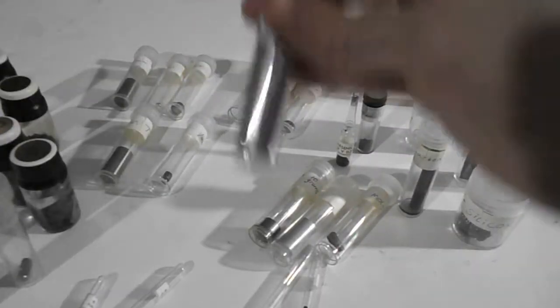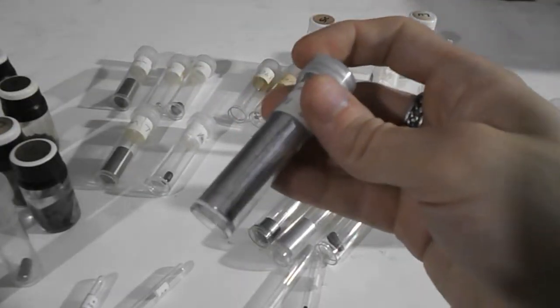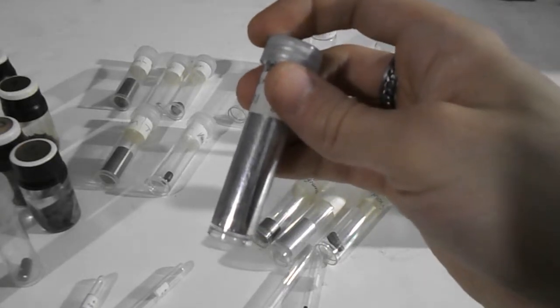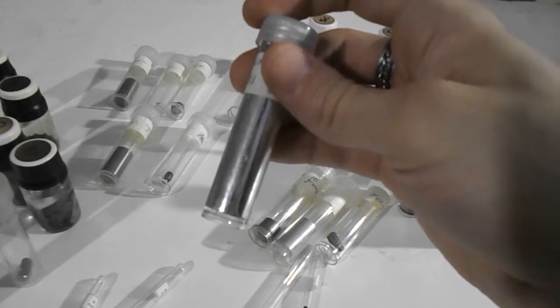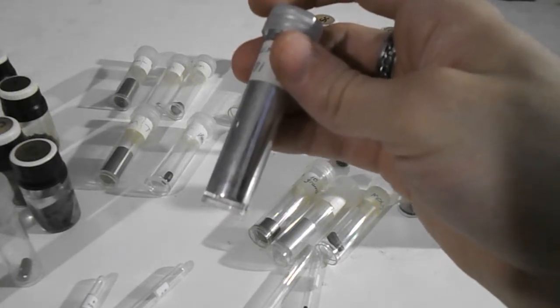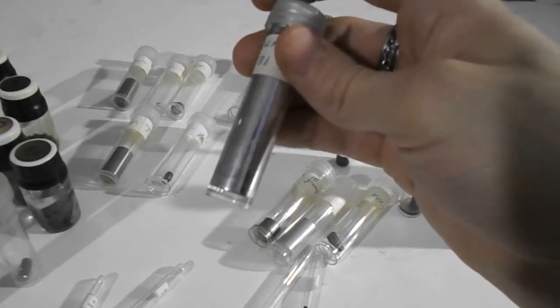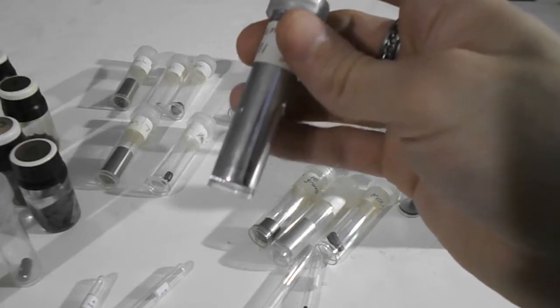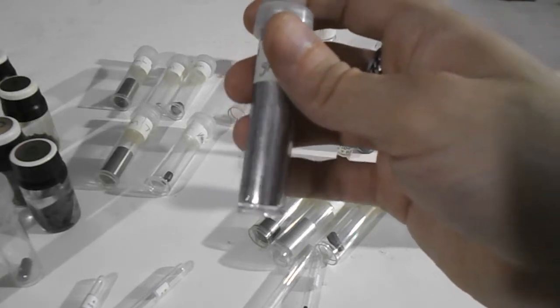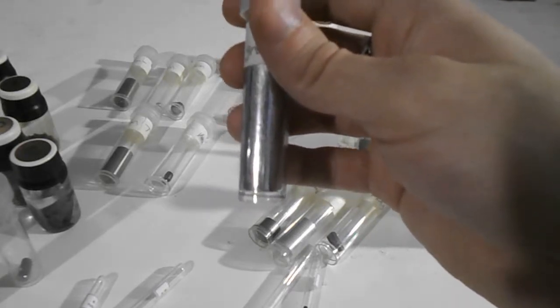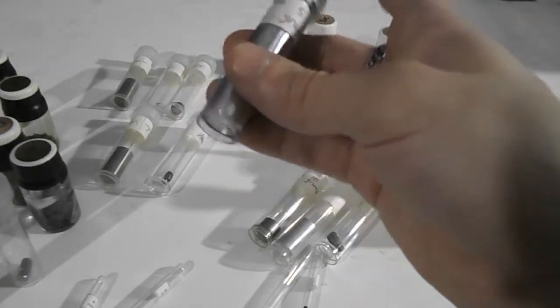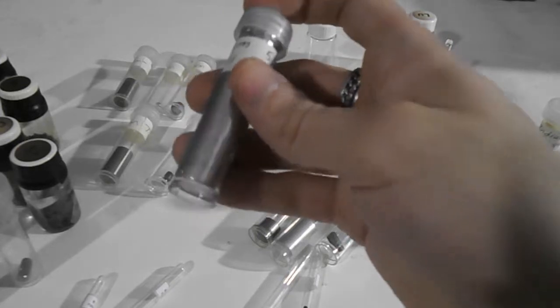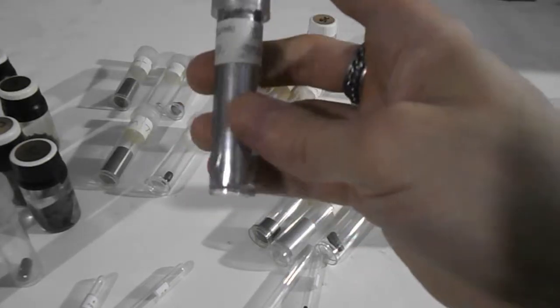This is gallium, which is liquid at just a few degrees over room temperature. I believe its melting point is around 86 Fahrenheit, roughly. Unlike mercury, it sticks to the sides of the tube when it melts and gives it this silvery color.